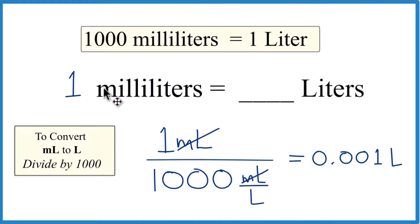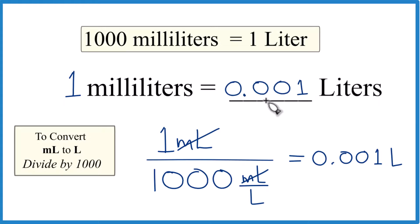So in answer to our question, one milliliter equals 0.001 liters.